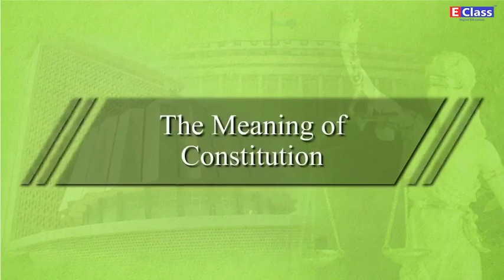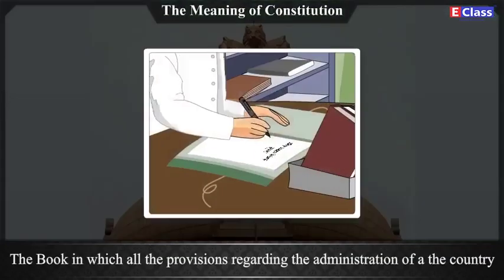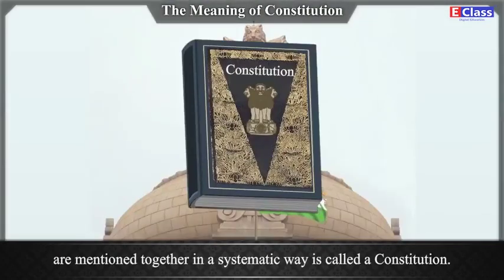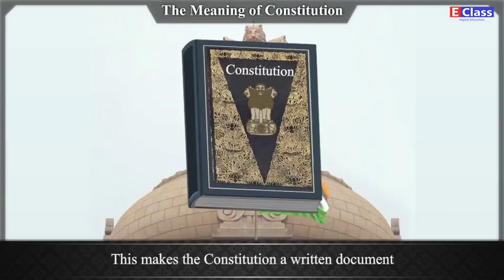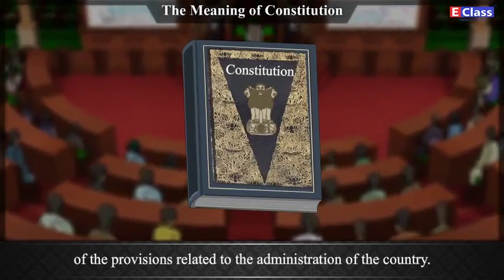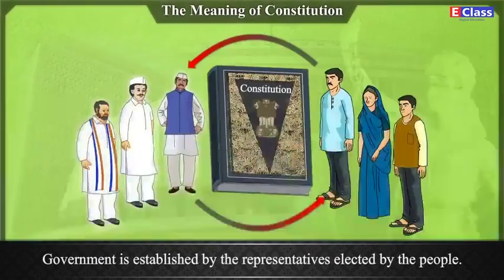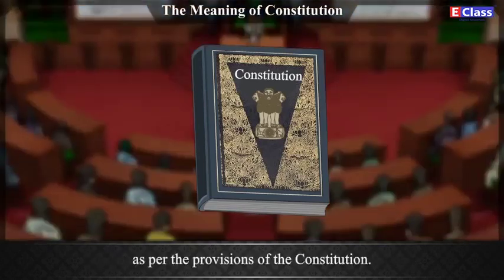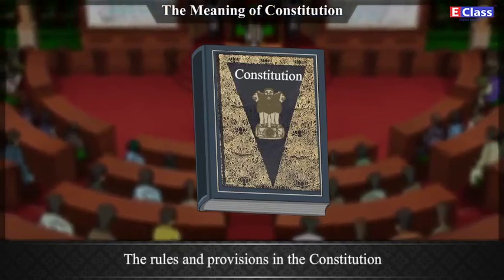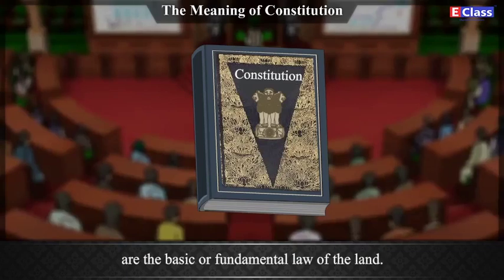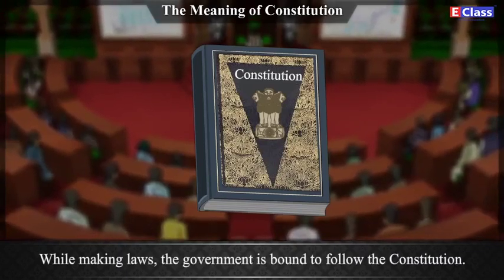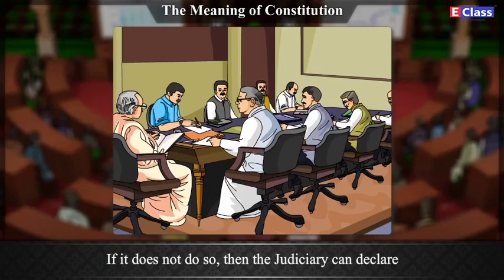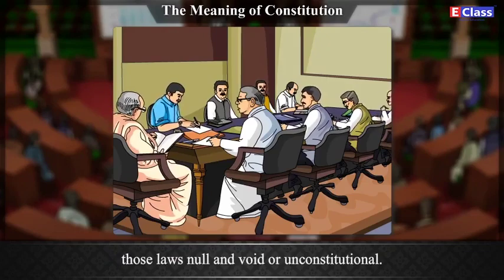The meaning of constitution: The book in which all the provisions regarding the administration of a country are mentioned together in a systematic way is called a constitution. This makes the constitution a written document of the provisions related to the administration of the country. Government is established by the representatives elected by the people. It is bound to carry out the administration of the country as per the provisions of the constitution. The rules and provisions in the constitution are the basic or fundamental law of the land. While making laws, the government is bound to follow the constitution. If it does not do so, the judiciary can declare those laws null and void or unconstitutional.